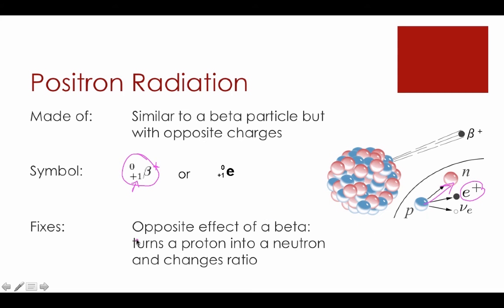And as I said, just like everything else, it has the opposite effect in terms of what it fixes that a beta particle does. It turns a proton into a neutron and ultimately changes that proton-to-neutron ratio. It just changes it in the other direction.